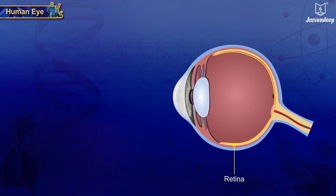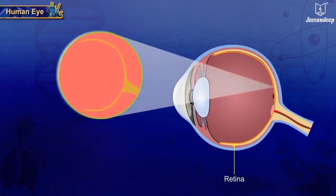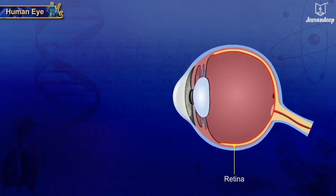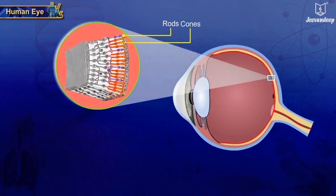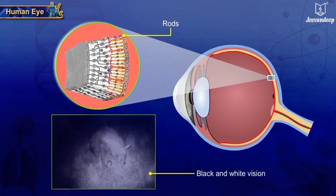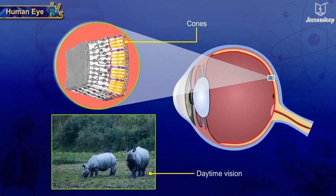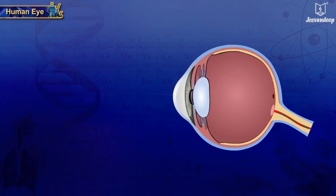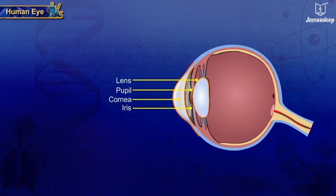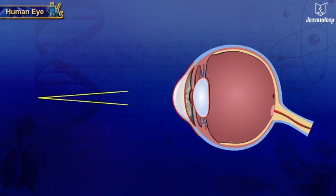The retina is the light-sensitive layer of tissue that lines the inner surface of the eye. The light-sensitive cells are of two types: rods and cones. Rods function mainly in dim light and provide black-and-white vision, while cones support daytime vision and the perception of color. The cornea, iris, pupil, and lens are mainly concerned with the refraction of light rays and bringing them into focus on the retina.